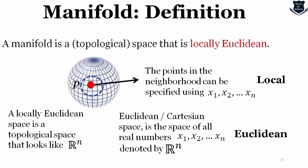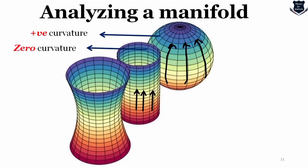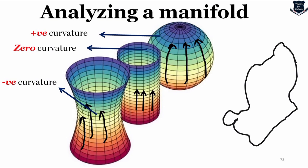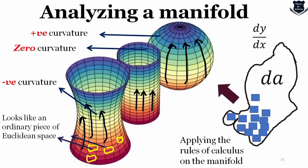Here are different kinds of manifolds. In a manifold with positive curvature, lines converge. In a manifold with zero curvature, lines go straight. In negative curvature, lines spread out. When we try to plot this positive, zero, and negative curvature on a flat piece, we differentiate using calculus — dy/dx — and get a kind of area dA. When applying the rules of calculus on this manifold, it looks locally Euclidean. These yellow lines look absolutely locally Euclidean.